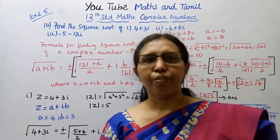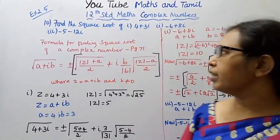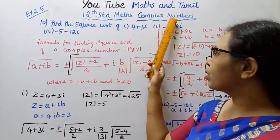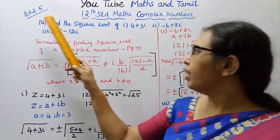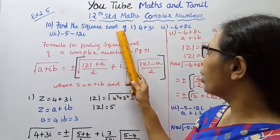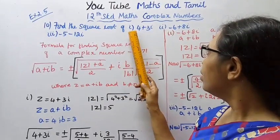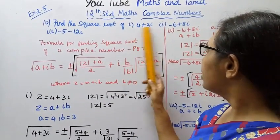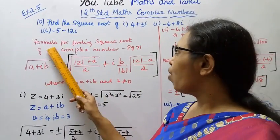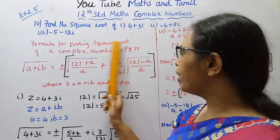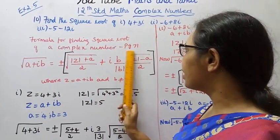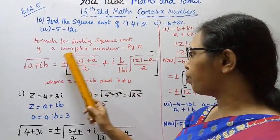Hello students, welcome to Max and Tumult channel. 12th standard Maths, complex numbers, Exercise 2.5 - find the square root of complex numbers. Go to the formula for finding the square root of a complex number on page 71.